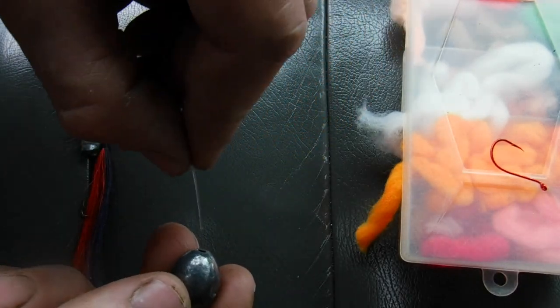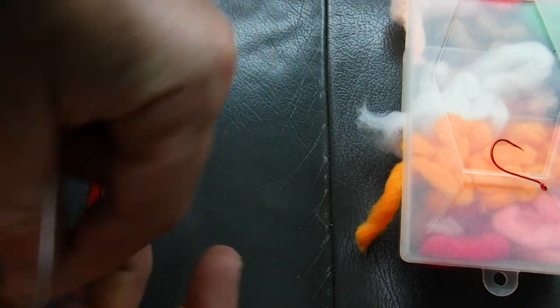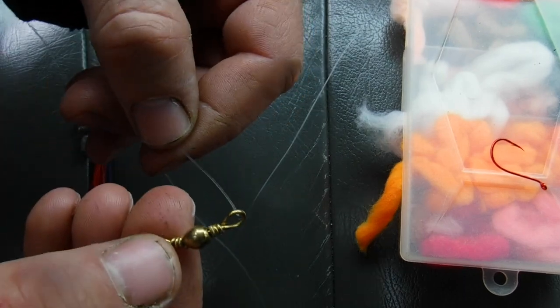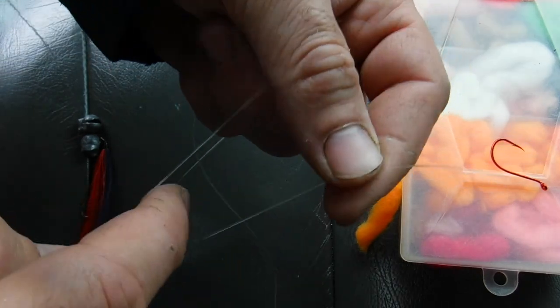So I've cut my line. I take the body of my line that's connected to my reel. I'm going to poke it through my egg sinker. And then I'm going to take that main body and just poke it through the other end of that swivel. And again I'm going to do that fisherman's knot.